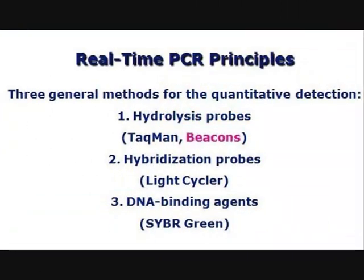Real-time PCR principle uses three general methods for quantitative detection: hydrolysis probe, hybridization probe, and DNA binding agent using SYBR Green. The hybridization probe uses a light cycler, and the hydrolysis probe uses a TaqMan probe.